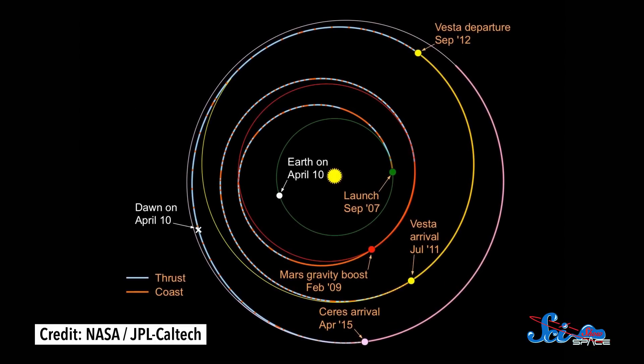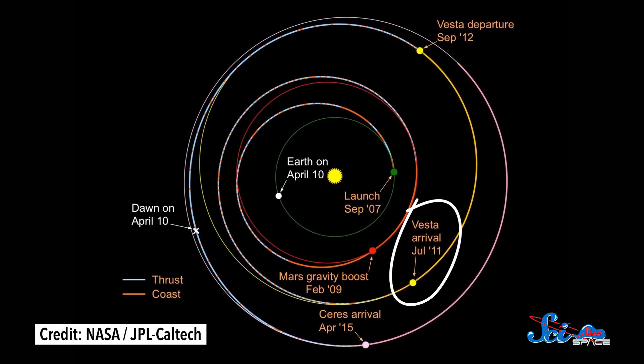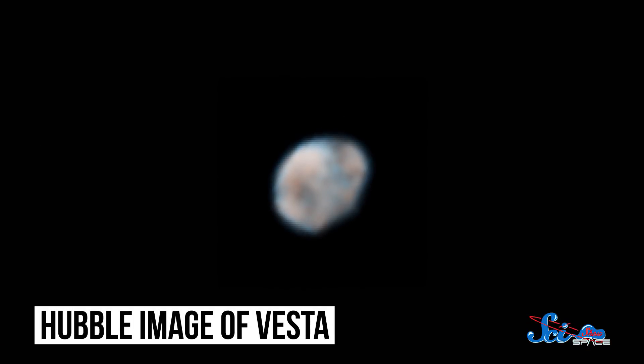First, Dawn traveled 2.8 billion kilometers to get to Vesta, where it arrived in 2011. Before Dawn, we already knew a little bit about the asteroid, thanks to the Hubble Space Telescope, like that it has a massive crater on its south pole.